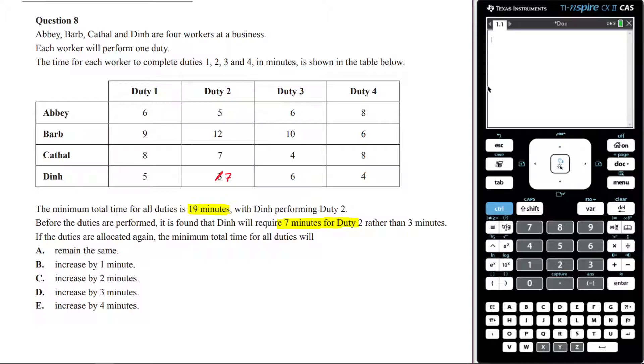This is the last question of the exam. If you're running out of time and you're thinking to yourself, I know I need to do the Hungarian algorithm here, but I'm not going to have time to do the Hungarian algorithm, have an educated guess if you're running out of time.